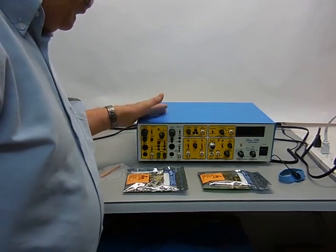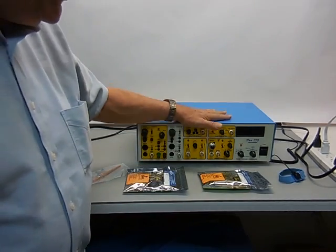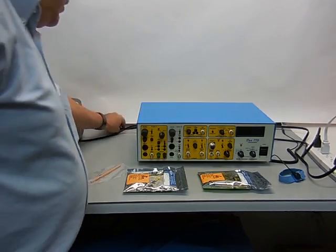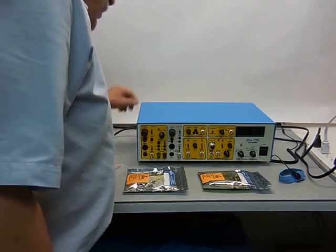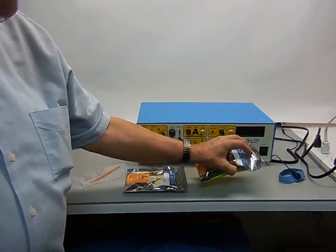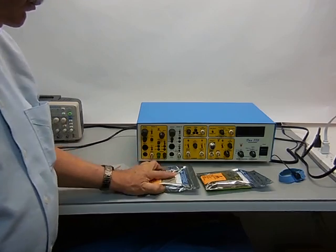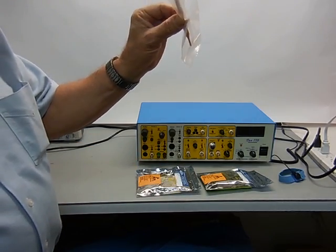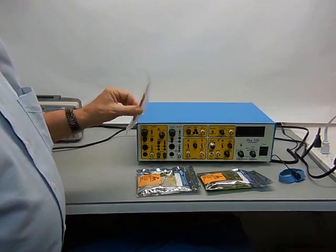When you unpack the Duo 773, you'll need the main box, power cord, the two probes in anti-static bags, and the adjustment tweaker. This tweaker will be used later in setup, but first you need to install the two probes in the front of the box.